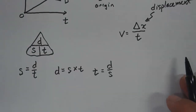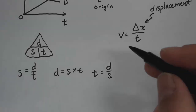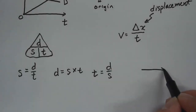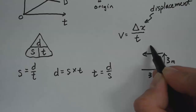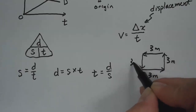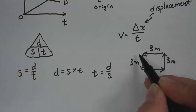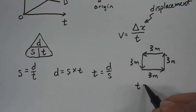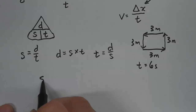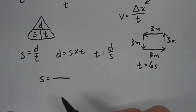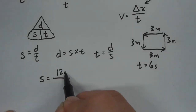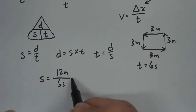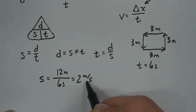Let's look at an example to understand the difference between speed and velocity. Say you went right 3 meters, up 3 meters, left 3 meters, and back down 3 meters — east, north, west, south — and it took 6 seconds. Your speed is the total ground covered: 3 + 3 + 3 + 3 = 12 meters, divided by 6 seconds, which equals 2 meters per second. That is your speed.